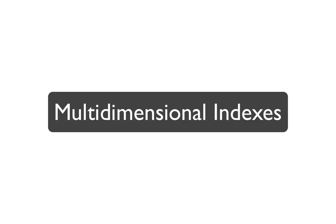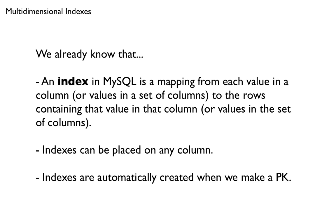I'm running a bit short on time, so this is going to be a quick and dirty, oversimplified explanation of multidimensional indexes. We already know what an index is, and we already know they can be placed on any column. We also know that when we create a primary key, an index is also automatically created.